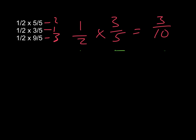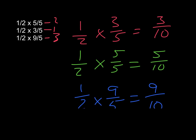And then when I do solve it I see that one half times three fifths is three tenths, one half times five fifths is five tenths, and one half times nine fifths is nine tenths. And I already have that in order.